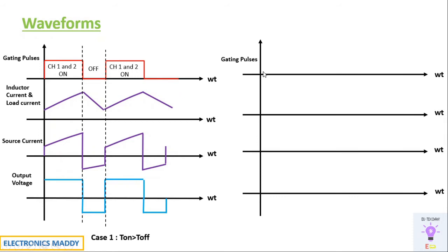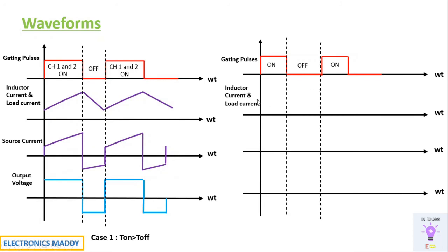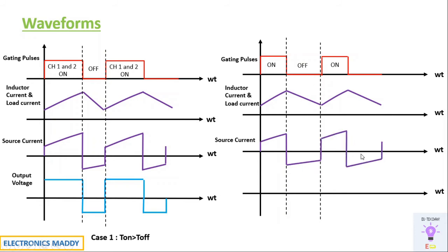When Ton is less than Toff, the pulses show that Toff is much greater than Ton. The nature of inductor current remains the same; only the duration of charging and discharging changes. The off time is more than the on time, so the inductor discharges for a longer duration than it charges. For source current, it starts increasing and when both switches are off, it goes negative — and the duration of negative source current is more because Toff is greater.